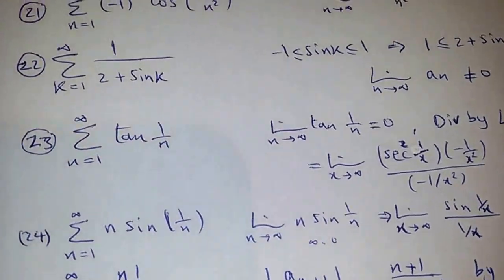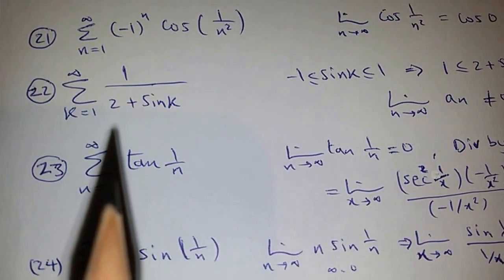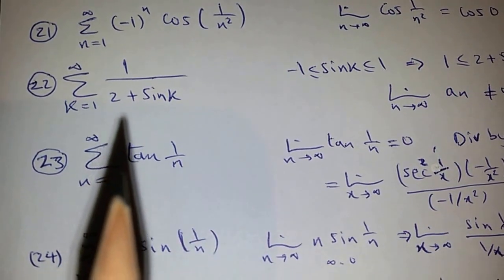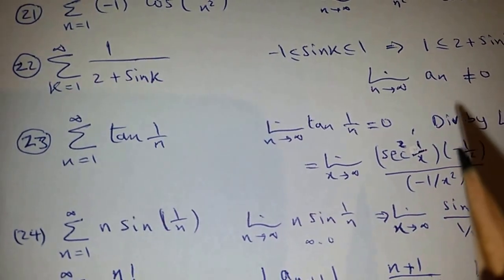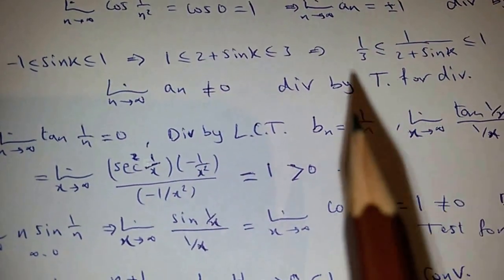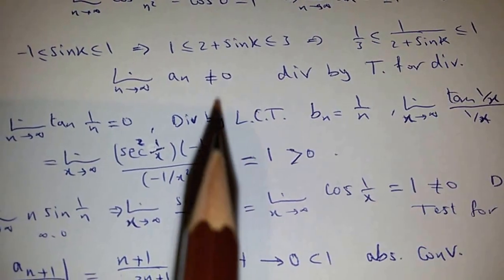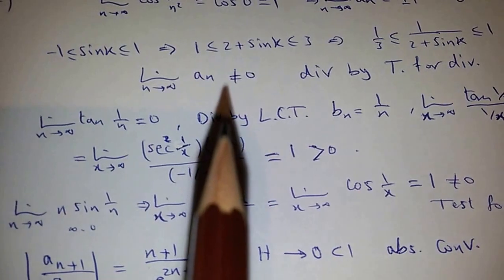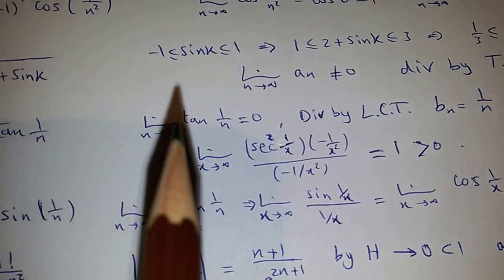Now consider this example. This series is also divergent by the test for divergence because the limit of A_N is not 0. Starting from sine being between −1 and 1, you can prove that 1 over (2 + sin(K)) is between 1/3 and 1. The limit of this is not 0 — it cannot be 0. So it oscillates because sin(K) oscillates between −1 and 1, so it's divergent.